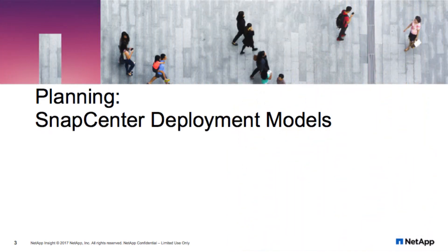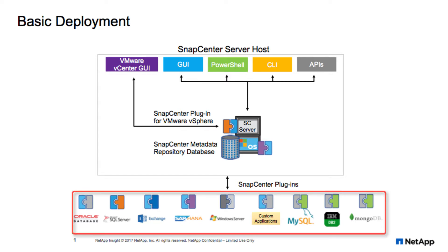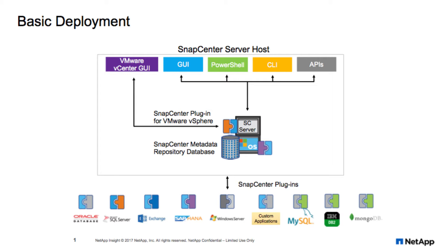One of the first considerations is what type of deployment will be performed. It can vary from the very basic to a scaled-out high availability deployment. Here you can see a single SnapCenter server installed with its repository on a local drive. There are multiple application and database plugins that can be deployed once the SnapCenter server is operational. This may not be the best architecture for an enterprise environment — while having the repository on local storage works fine, we recommend placing it on protected NetApp storage for enhanced resiliency.